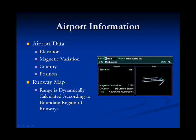Shown here is the airport information, which includes airport elevation, magnetic variation, country, and position. On the right-hand side shows a runway map for the airport. The range for the runway map is calculated using a special algorithm which takes all of the positions for the runways and orders them together, which creates a bounding region. The range is then taken as the center of this bounding region to the lower left-hand corner. This range is different for all airports so that the runway information will be displayed correctly for all airports.